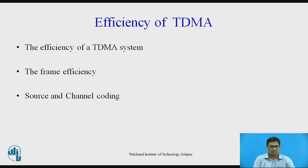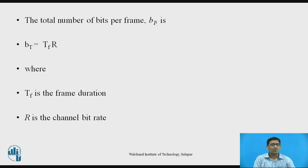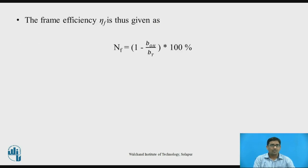The frame efficiency can be found as follows. The number of overhead bits per frame, BOH, is equal to NR × BR + NT × BP + NT × BG + NR × BG. Where NR is the number of reference bursts per frame, NT is the number of traffic bursts per frame, BR is the number of overhead bits per reference burst, BP is the number of overhead bits per preamble in each slot, and BG is the number of equivalent bits in each guard time interval. The total number of bits per frame, BT, is BT = TF × R, where TF is the frame duration and R is the channel bit rate. The frame efficiency NF is given by: NF = (1 − BOH / BT) × 100, expressed as a percentage.